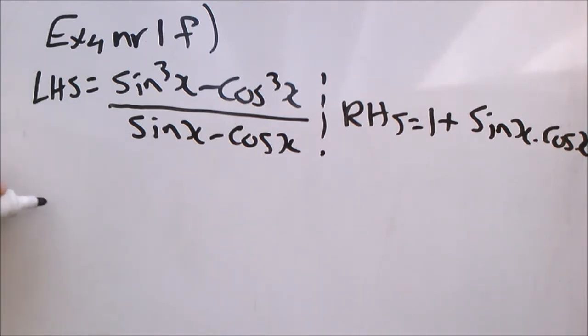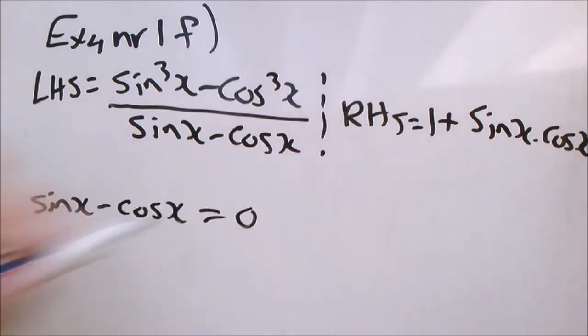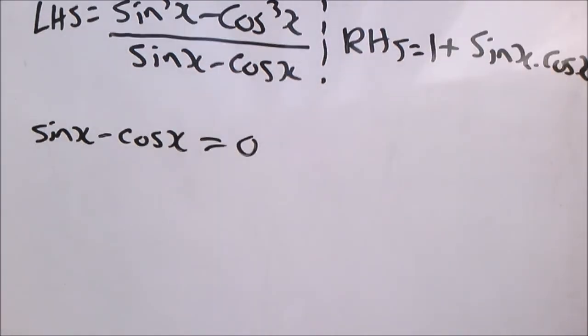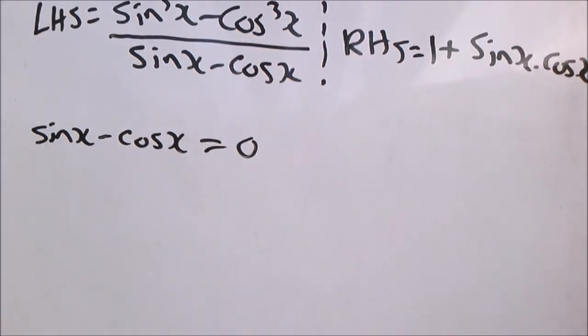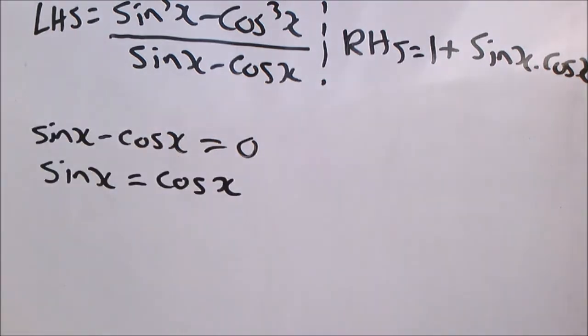So we know it will be undefined where sin x minus cos x is equal to 0. So we just need to solve for x now. Then we will know these x values it will be undefined. So first things first, we take the cos x across. So we have sin x equal to cos x.